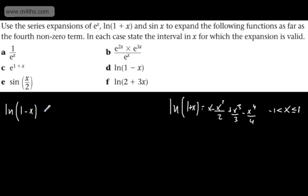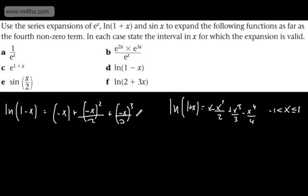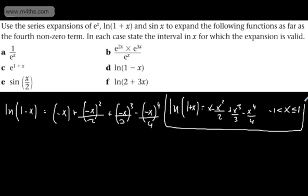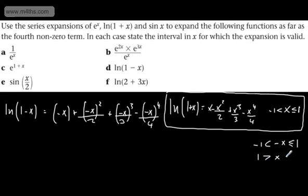If we want natural log of 1 minus x, every time we see an x we're just going to put in minus x. So we get minus x minus (minus x) squared over 2 plus (minus x) cubed over 3 minus (minus x) to the 4th over 4. Now let's consider the interval that is now valid for. We're dealing with negative x, so placing negative x in the original interval gives us negative x strictly greater than minus 1 and less than or equal to positive 1. Dividing through by the negative, the inequality signs get changed, so we get 1 greater than x, which in turn is greater than or equal to negative 1.